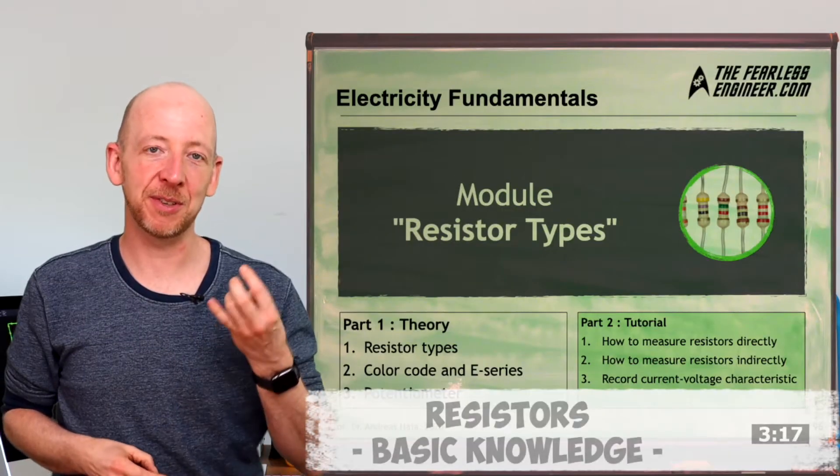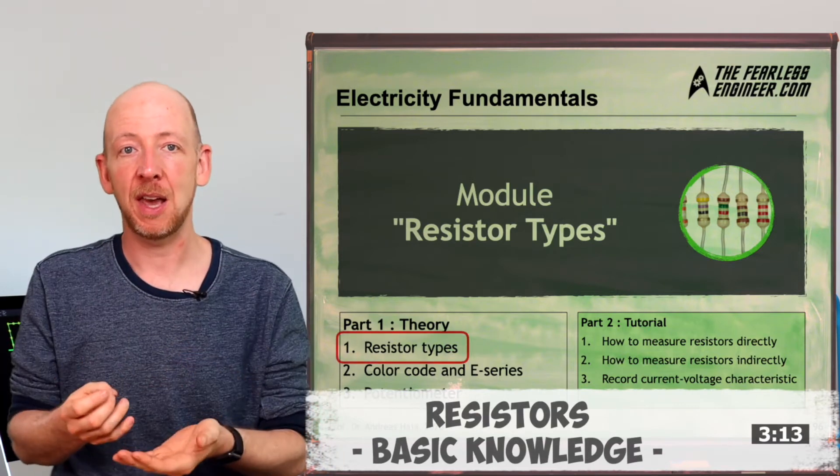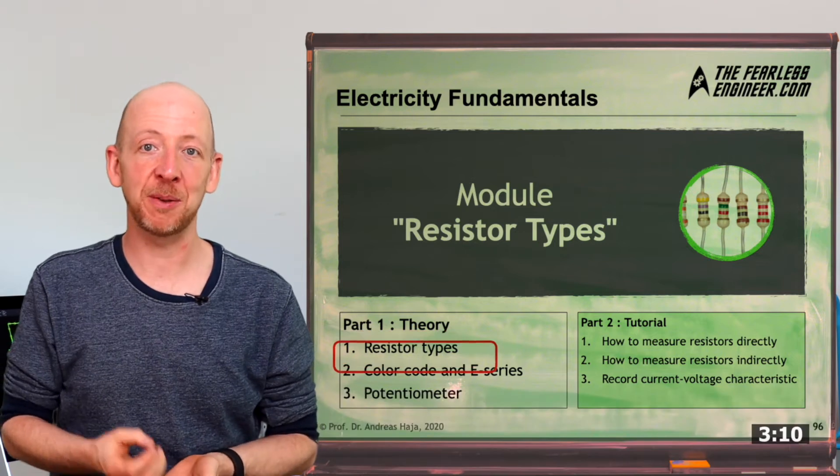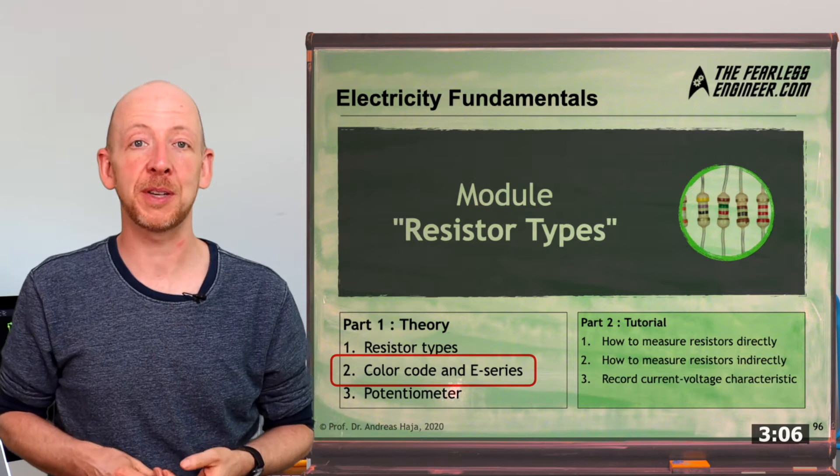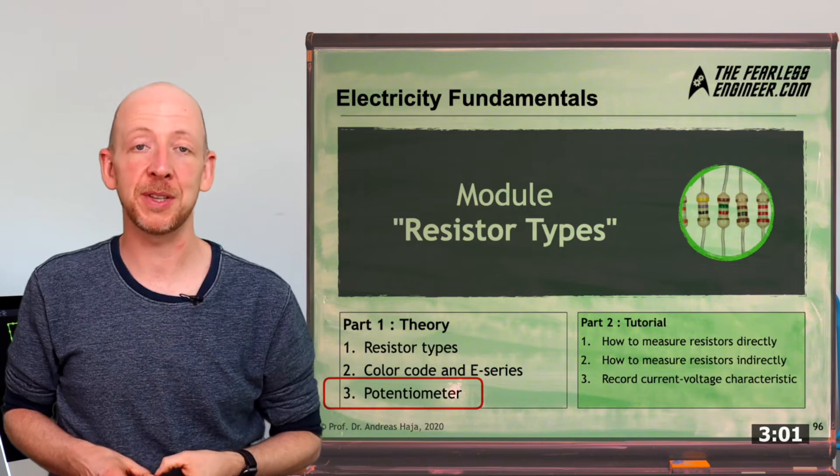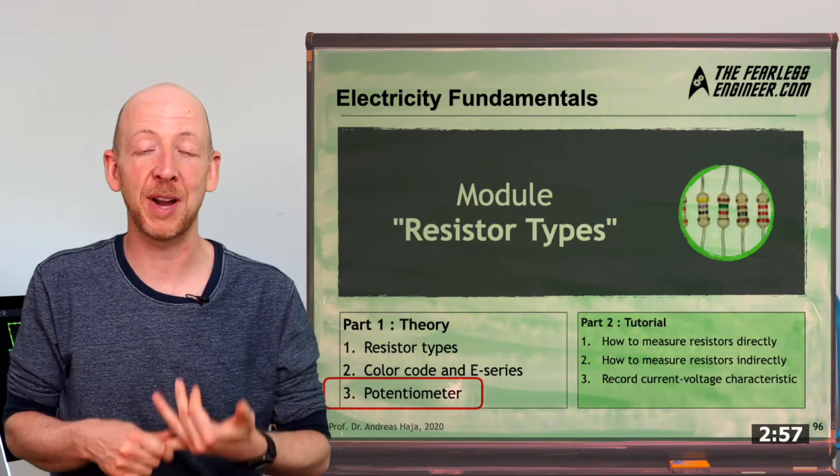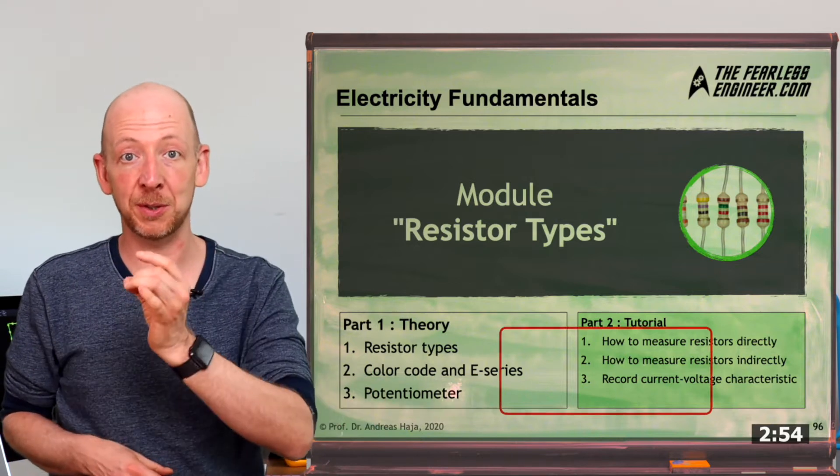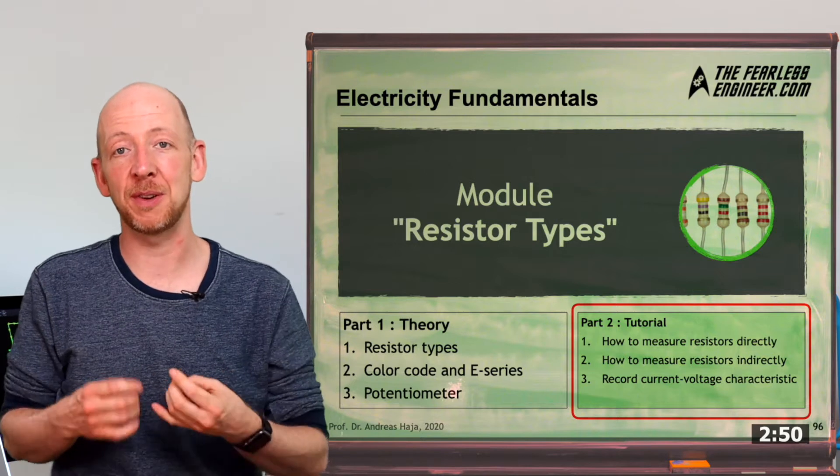And here we go with an overview of the component resistor. In this video, we will look at how electrical resistors actually work. For this purpose, we will look at how they are constructed and which variants we often find. And we'll also explain to you the color code of a resistor and how they work. And finally, we will have a look at a special type of resistor, which is called a potentiometer, which you can use to adjust the resistance value on the fly by turning a knob.